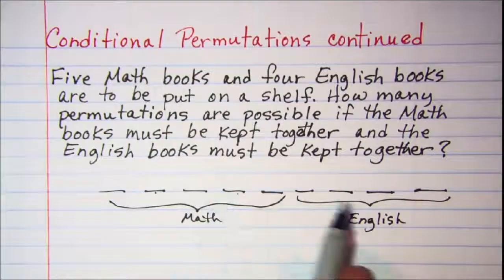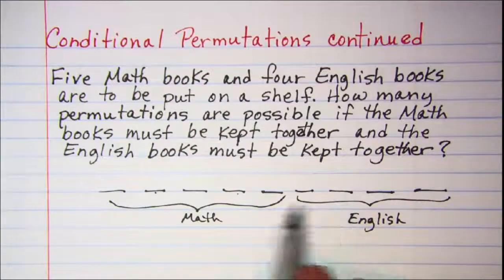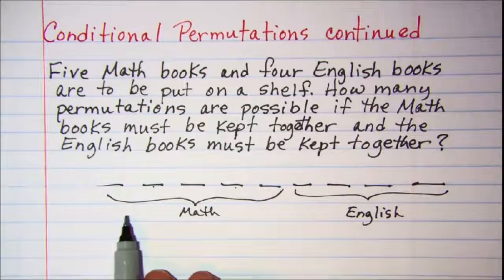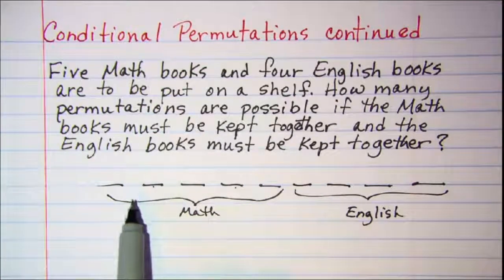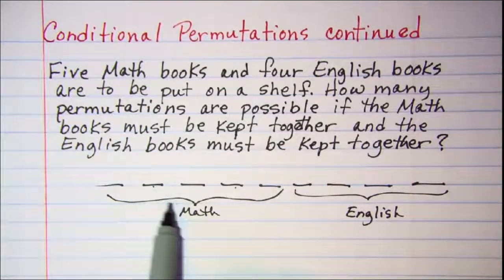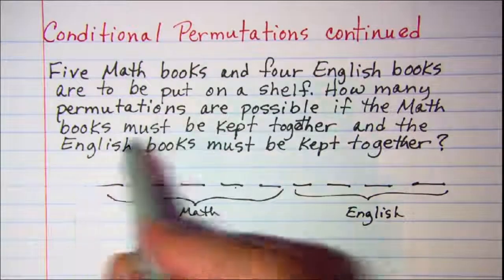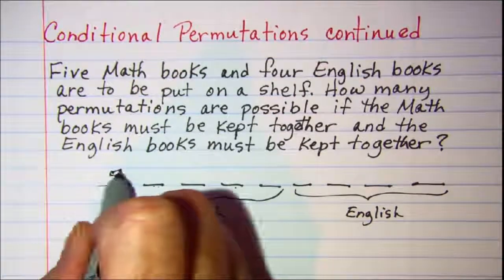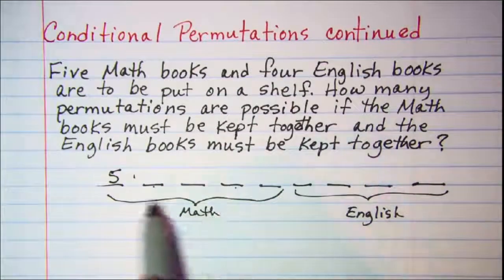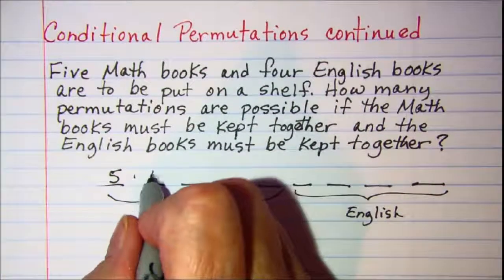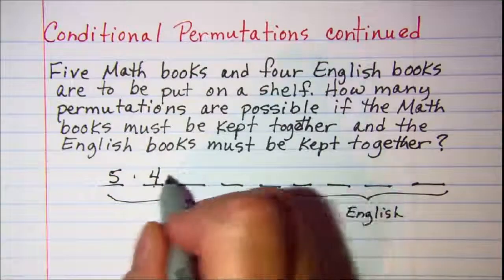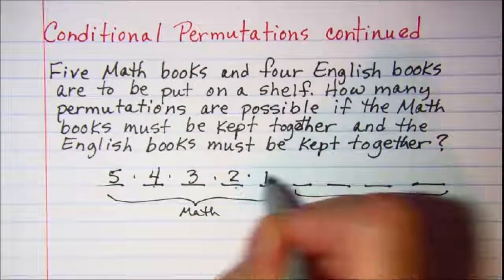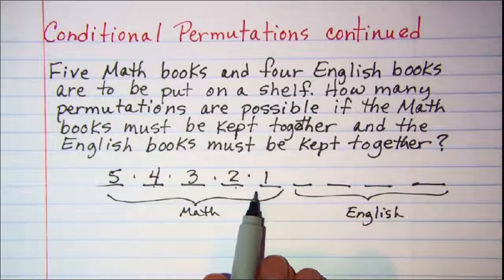And then whatever number we get for our permutations this way we can double that for when we put our English books on the left. So when we're stacking our books we have five math books to choose from to put up here in the first spot. So there's five books and then I only have four books left to be put up next to this one. And then three and then two and then one. So now I have my math books stacked on my shelf.